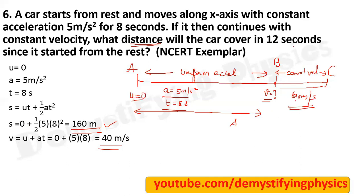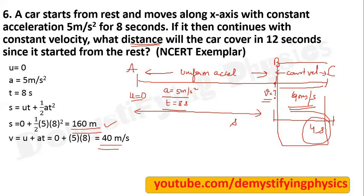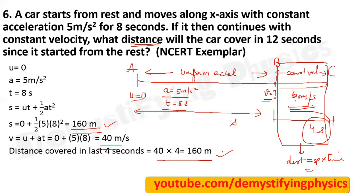If you ask distance for 12 seconds, then after 8 seconds you need to find distance for 4 seconds. When you have uniform speed, you use the formula: speed is equal to distance upon time, so distance is speed into time. Speed 40 multiplied by time 4 gives 160 meter. Therefore total distance traveled in 12 seconds is equal to 160 plus 160, which is 320 meter.